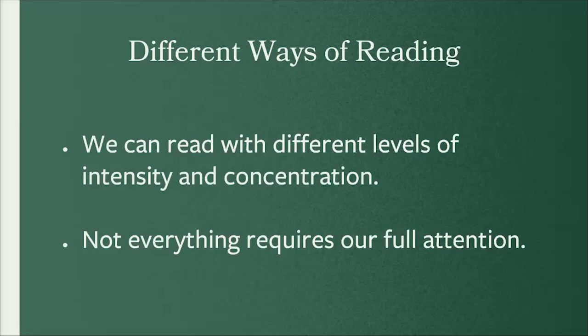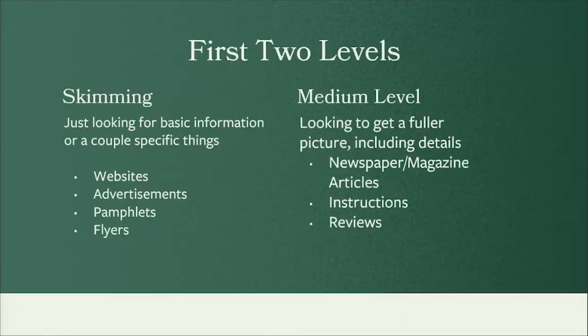We engage in many different levels of intensity as we encounter the written word from day to day. Because not everything requires our full attention, we're often able to read quickly and shallowly or slowly and intently. Let's think of there as being three levels of reading intensity. When we use the least intense level, we're usually looking at websites, flyers, or advertisements just to get simple factual information. At the middle level, we take more time to read each phrase and sentence because we're interested in more detailed aspects of a piece, such as a newspaper article or a movie review.